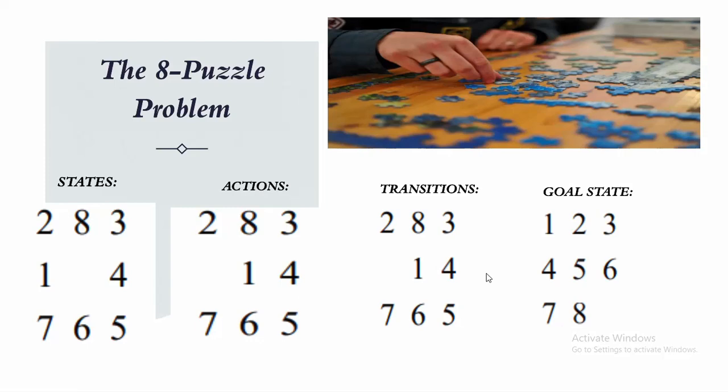A state represents a specific configuration of the 8 puzzle with the position of the tiles on the 3×3 grid. For example, in a state it may look like this, where there is one blank tile. Actions represent the possible moves that can be made from one state to another. In the 8 puzzle, the possible actions are sliding a tile into the blank tile's position either horizontally or vertically to swap their positions. For example, actions from the above state could be sliding tile 1 to the right or sliding tile 7 upwards.